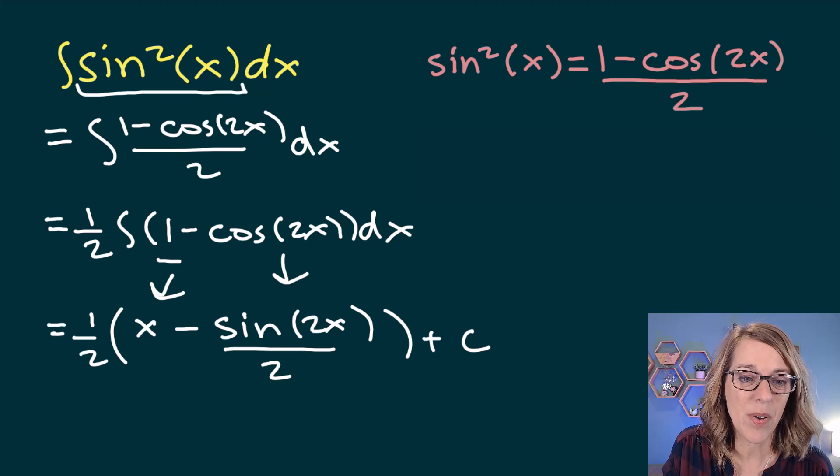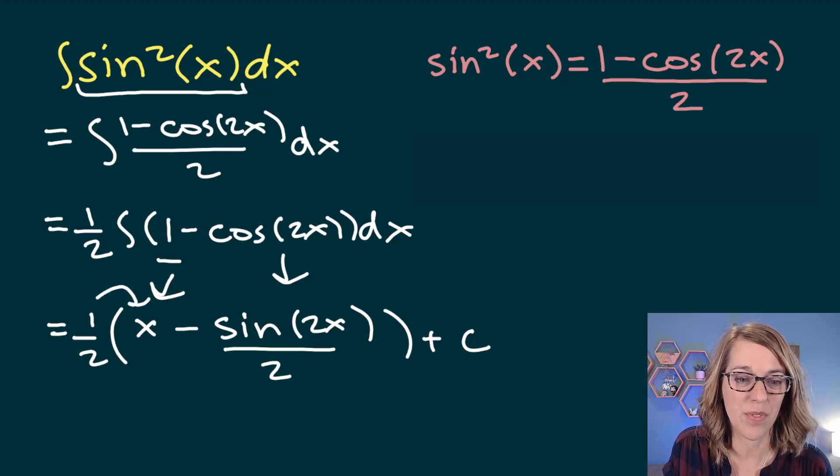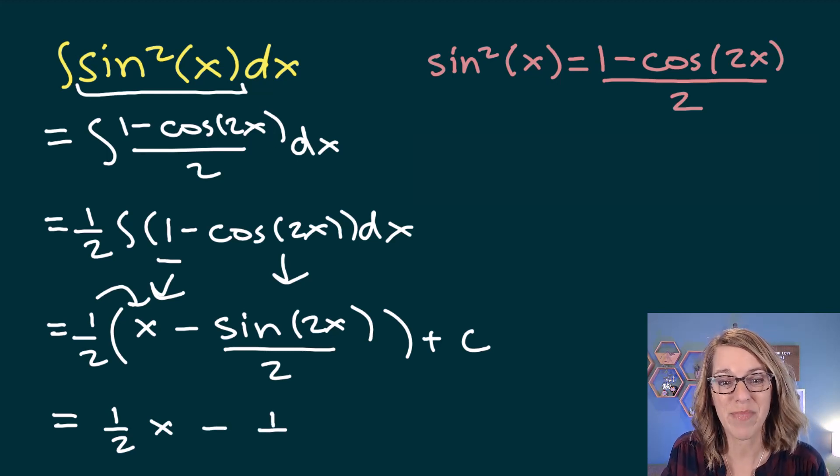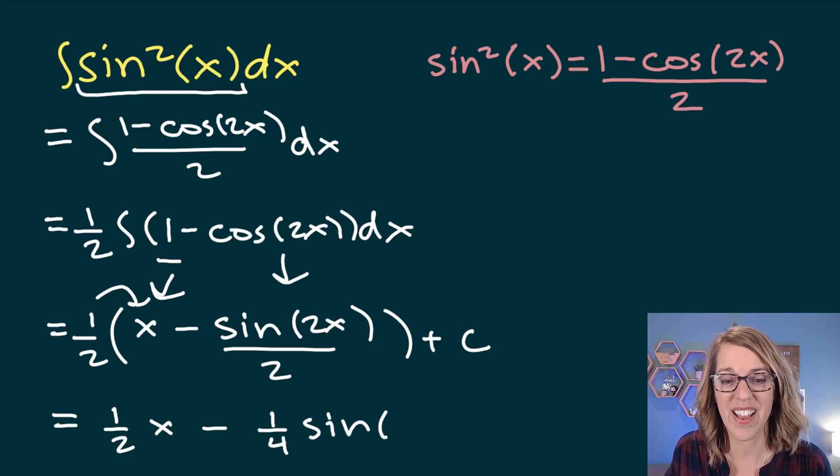Let's clean this up. I'm going to go ahead and move the 1 half through. So I end up with 1 half x, and then I get minus. That's going to be a 1 over 2 times 2. So how about a 1 over 4 sine of 2x plus c.